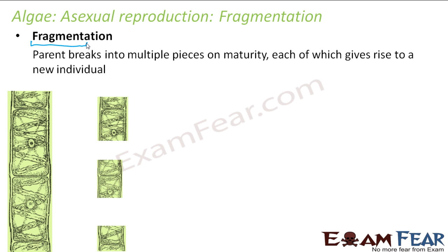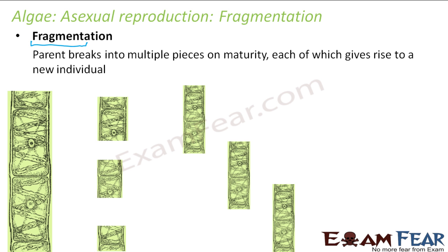Let us take the example of Spirogyra, which reproduces asexually by fragmentation. When a Spirogyra becomes mature it breaks into different pieces. The body gets divided into three pieces — the first portion, the middle portion, and the last piece — and each of these pieces is capable of giving rise to a new organism altogether. There is just one parent involved and three daughter organisms are produced. This is what happens in fragmentation.